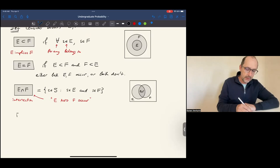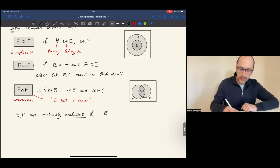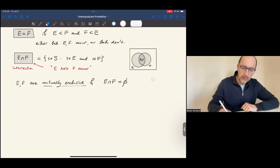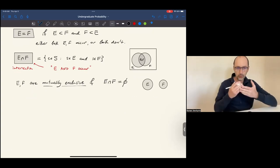We say that the two events E and F are disjoint, or more often we say mutually exclusive, that's the same, if the intersection is empty. This means that E and F may not occur simultaneously, ever. There is no common part.